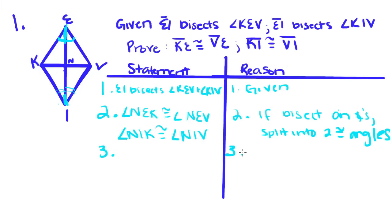So next, we have two pairs of congruent angles. And we're trying to prove that this is congruent to this, and this is congruent to this. So the best way to prove that is to prove that these triangles are congruent. And if you look, we have an angle, a shared side right here, which is congruent to itself, and another angle. So the best way to do that is say that triangle EKI is congruent to triangle EVI.